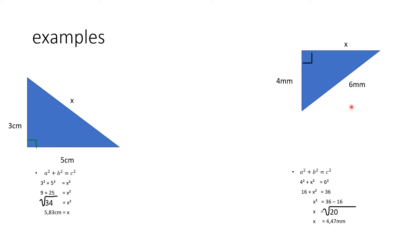The theorem says the square on the hypotenuse, so 6 squared is equal to the sum of the squares on the other two sides: 4 squared plus X squared. Now 4 squared is 16, and 6 squared is 36. This is now a linear equation. To solve it, I'll keep X on the left-hand side and 36 on the right-hand side. The plus 16 moves across the equals sign and becomes minus 16. So 36 minus 16 is 20. I'm solving for X, so the square becomes a square root. X is equal to the square root of 20, which is 4.47 millimeters.